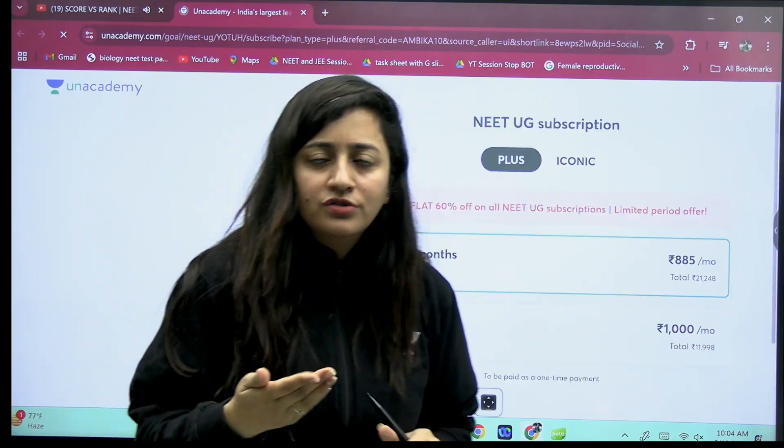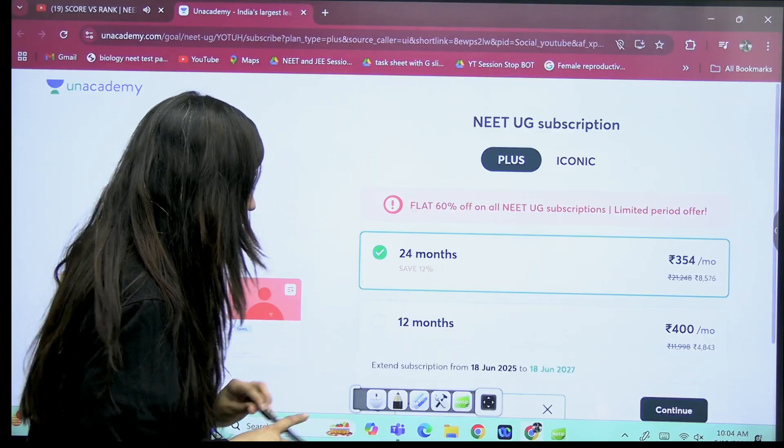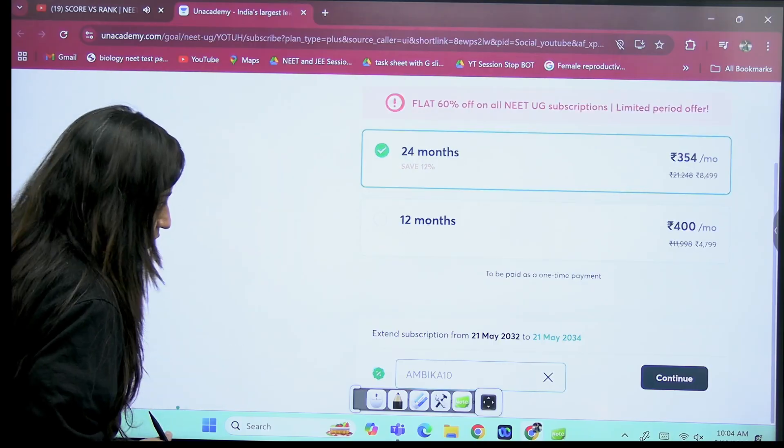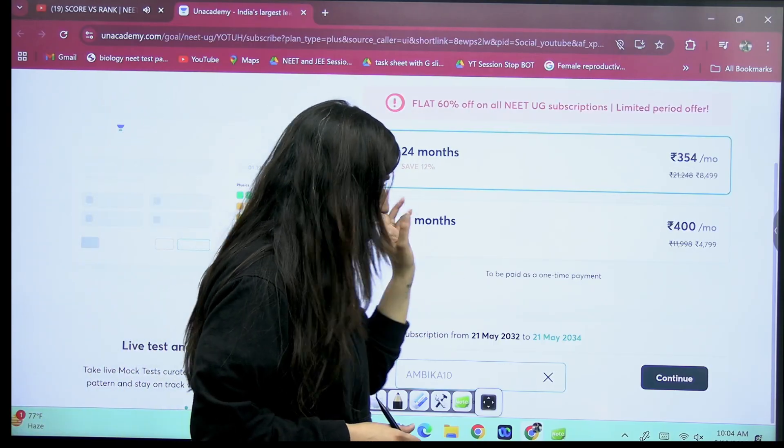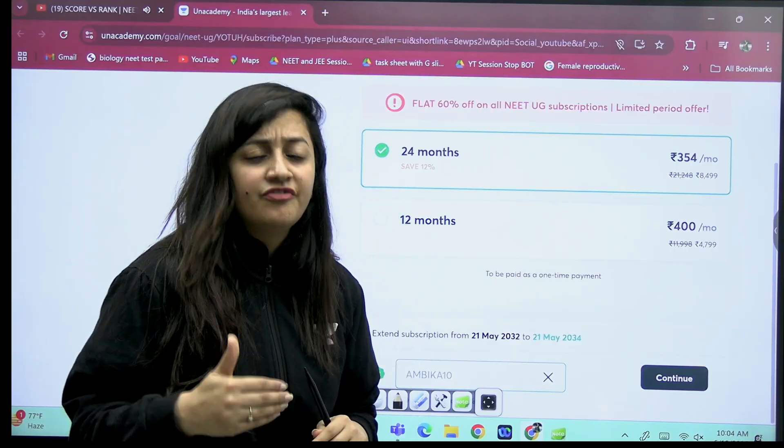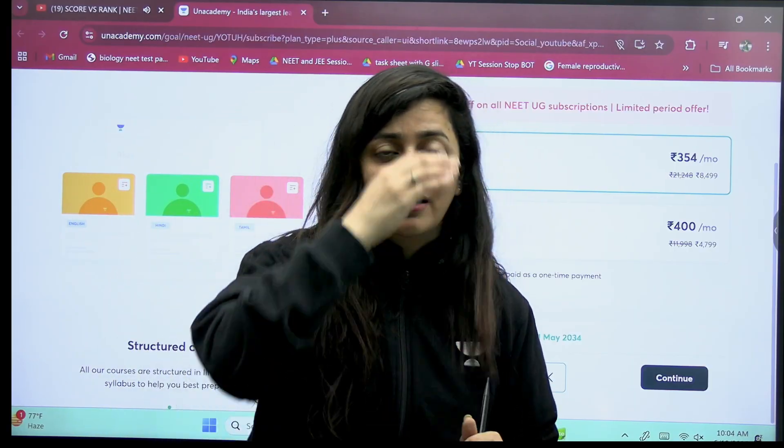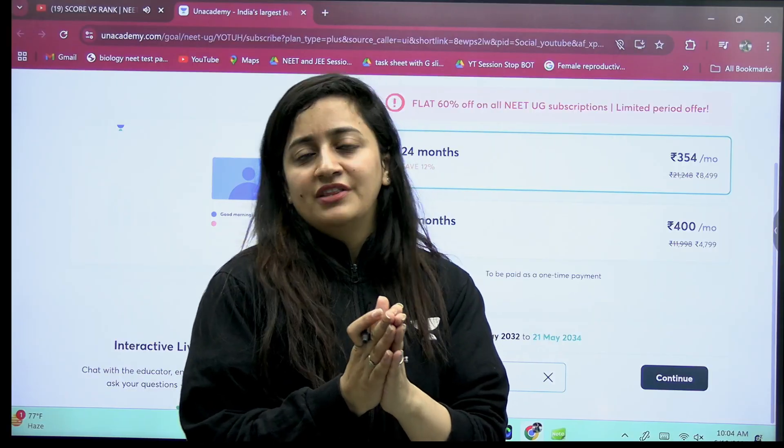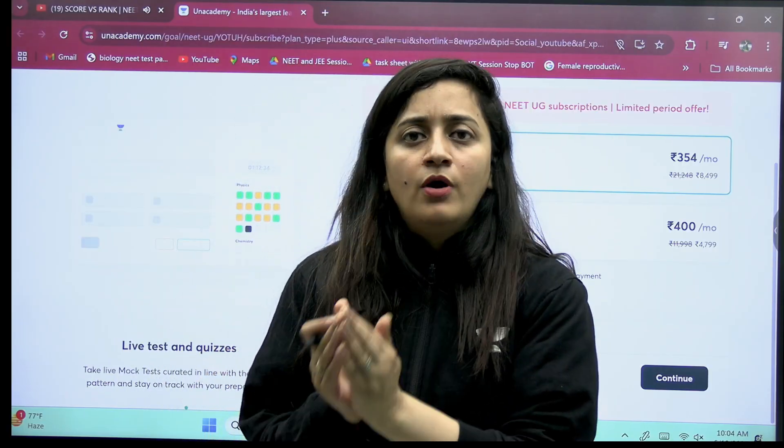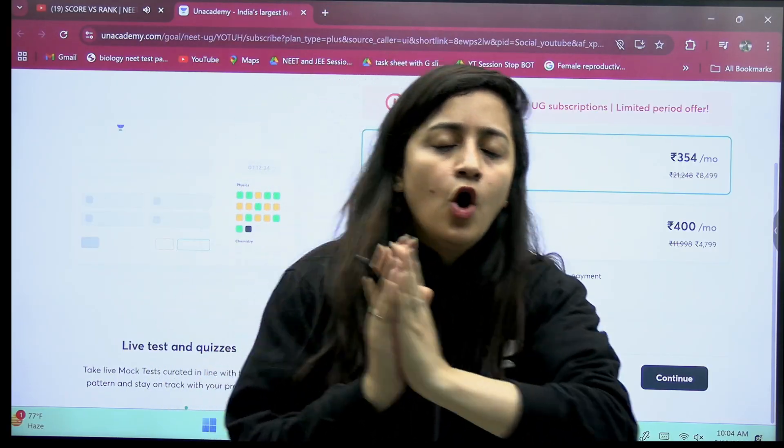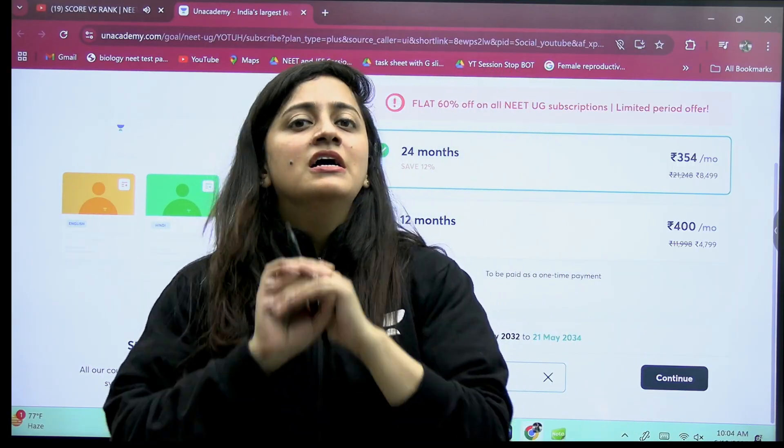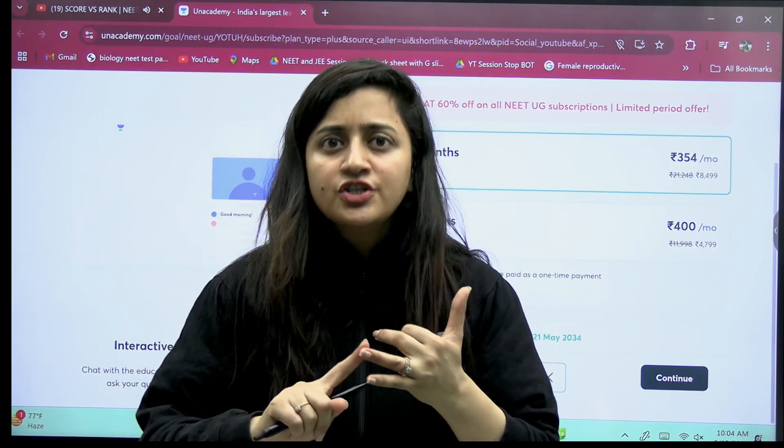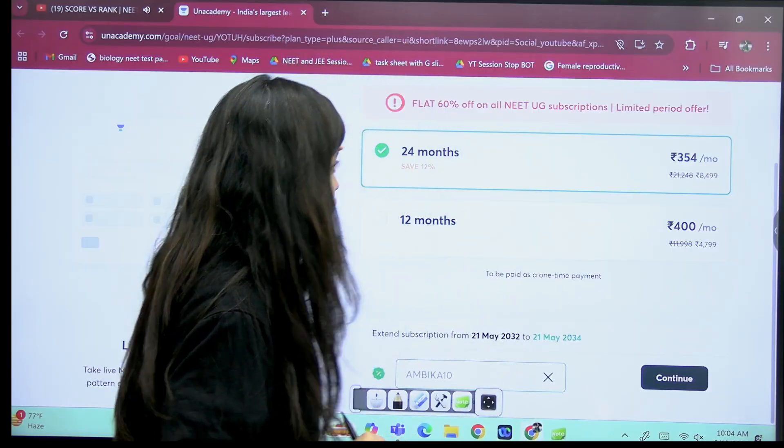If you want the modules, the study material, the hard copies, you can go for Iconic subscription. But if you want PDFs only, you can go for Plus subscription as well. If you're interested in buying two years course, if you're in class 11th, we have batches like that. And the beauty is that if you enroll yourself in the Plus Plus platform, you will have access of all the batches running across an Academy platform without any extra charges. Test practice and secure practice, everything will be provided.